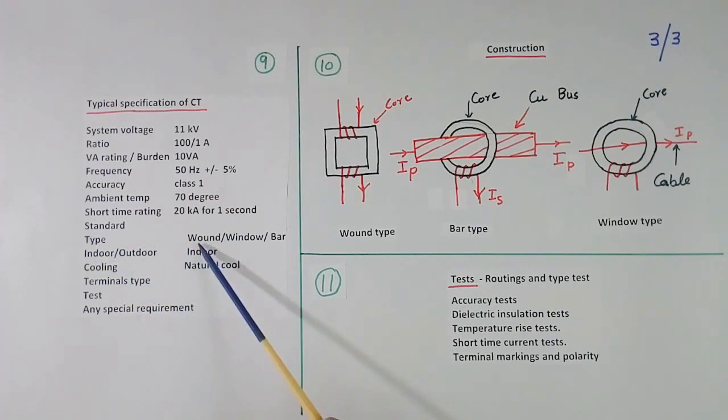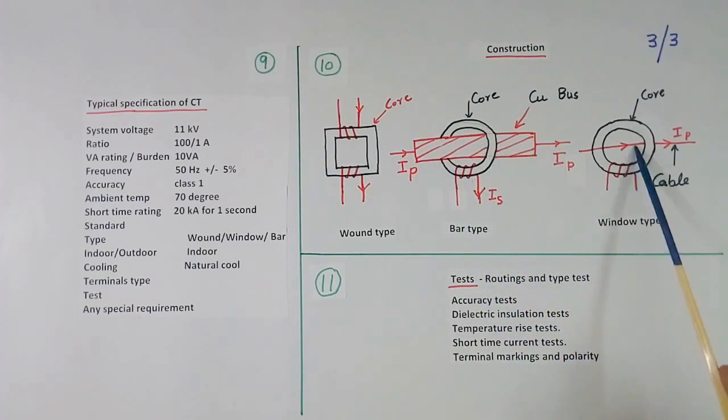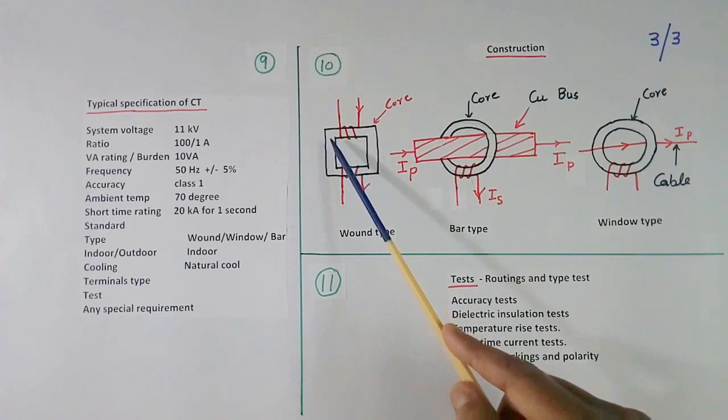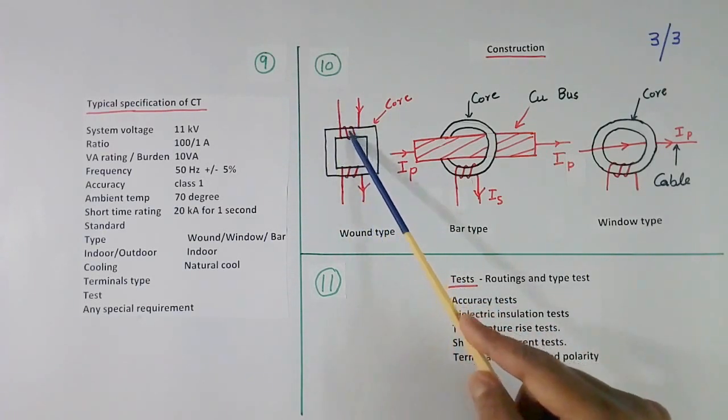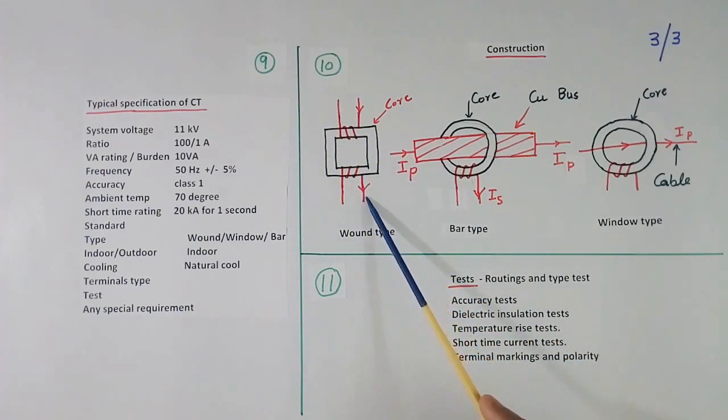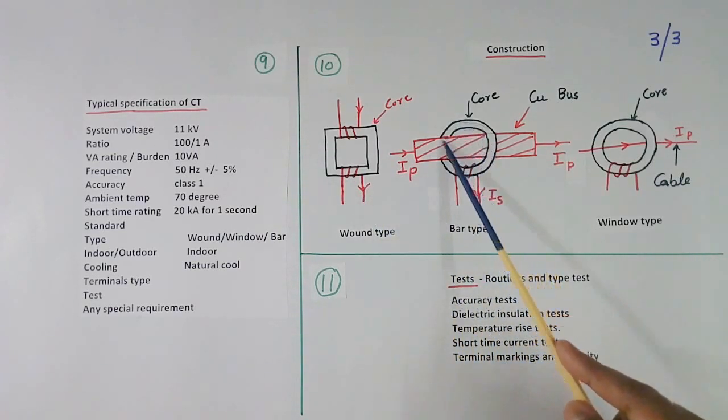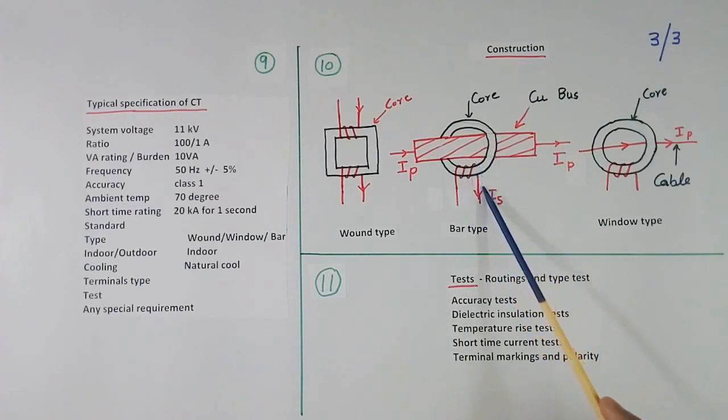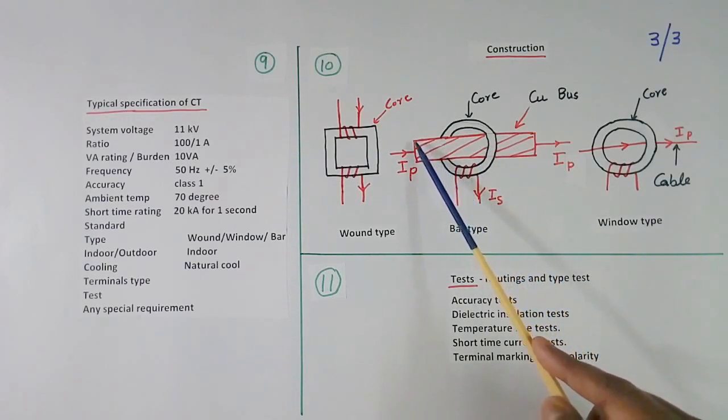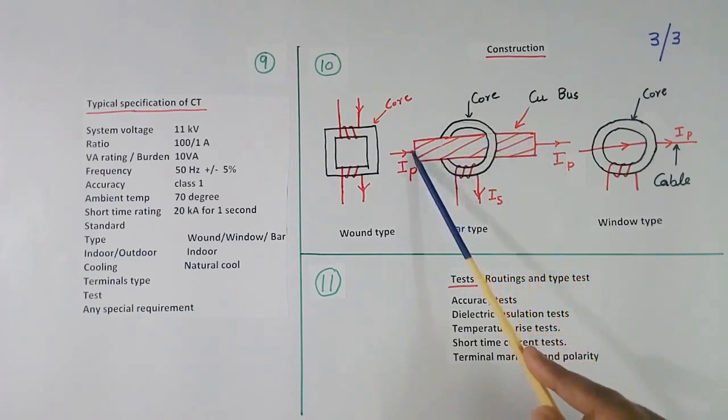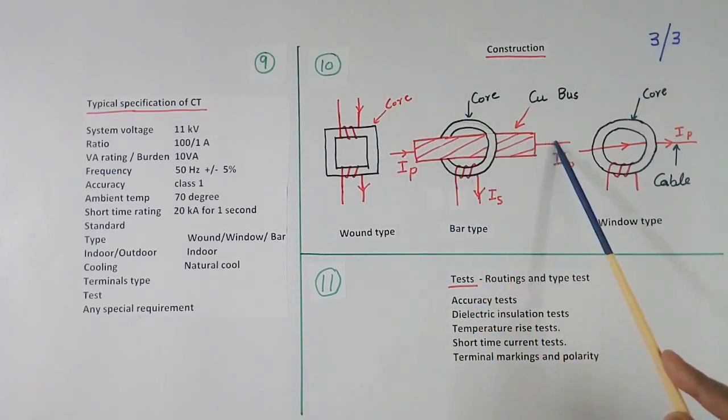Then type. There are 3 types of CT. Wound, window or bar. This is wound type. This is bar type. This is window type. One core will be there. There will be primary winding. There will be secondary winding. In bar type, there will be ring core. Secondary winding will be there. And primary there will be no winding but only bar. This is equivalent to 1 turn. And wire will come here and from here it will go.